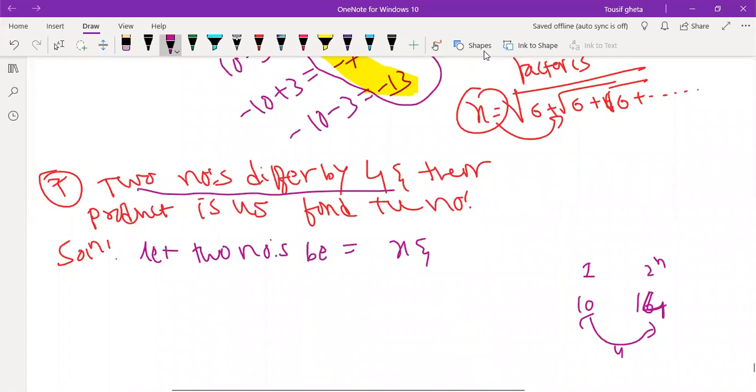They differ by 4 or no if 10 and 14 is there. So you cannot let the two numbers be x and x minus 4. Or even you can write x and x plus 4 also. You understood? You can write x and x plus 4. If you take x plus 4 also they differ by 4. If you take x minus 4 also they differ by 4.